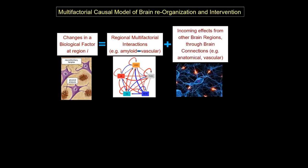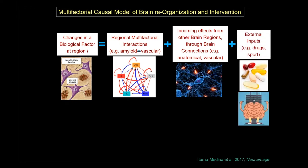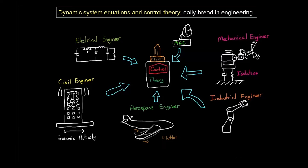The model also assumes that alterations in the brain propagate from specific brain regions to other regions, and that any change in a given biological factor depends on external inputs — such as whether the person is taking drugs, doing physical exercise, or following a specific diet. Mathematically, this general model can be translated into a set of differential equations — formalisms used in many engineering applications including industrial, aerospace, civil, and electrical engineering. In practice, we acquire different imaging modalities for each person at different time points and incorporate cognitive and clinical evaluations.